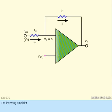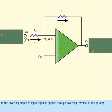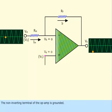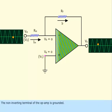The inverting amplifier. In the inverting amplifier, input signal is applied through inverting terminal of the op-amp. The non-inverting terminal of the op-amp is grounded.